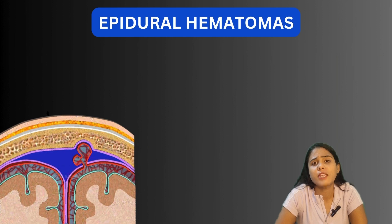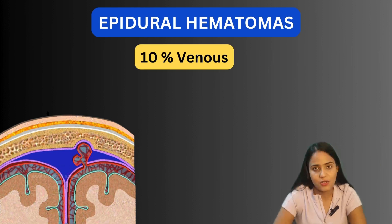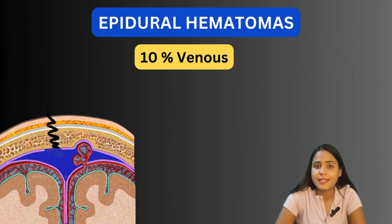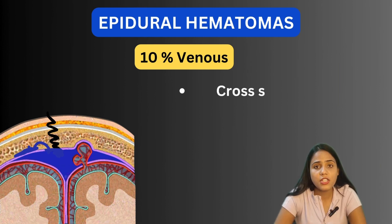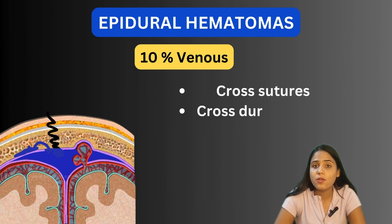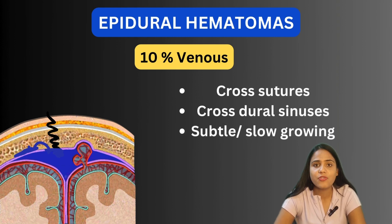10% of EDHs have a venous source of bleeding. In venous EDHs, a skull fracture crosses a dural venous sinus, causing tearing of the dural layer and accumulation of blood from the dural sinus into the epidural space. These venous EDHs are very difficult to diagnose because they are very subtle and slow-growing both clinically and on imaging. There are three important venous types of EDHs to discuss.